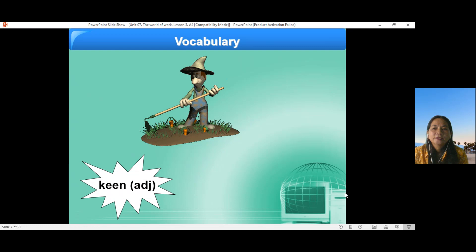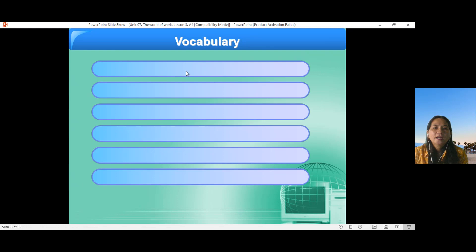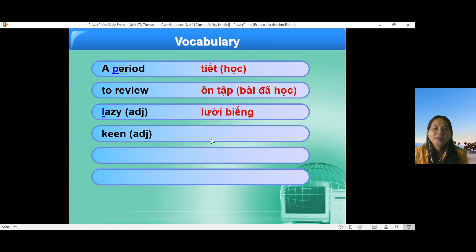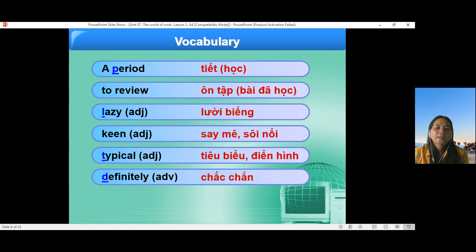Now keen. Keen. Okay. Keen. Now say mê. I have new words. Period. Tiết học. To review. Ôn tập. Lazy. Lười biếng. Keen. Say mê. Sôi nổi. Typical. Tiêu biểu điển hình. Now. Definitely. Definitely. Okay. Chắc chắn. Nào các lớp chúng ta nghe cô đọc. Đọc lại.